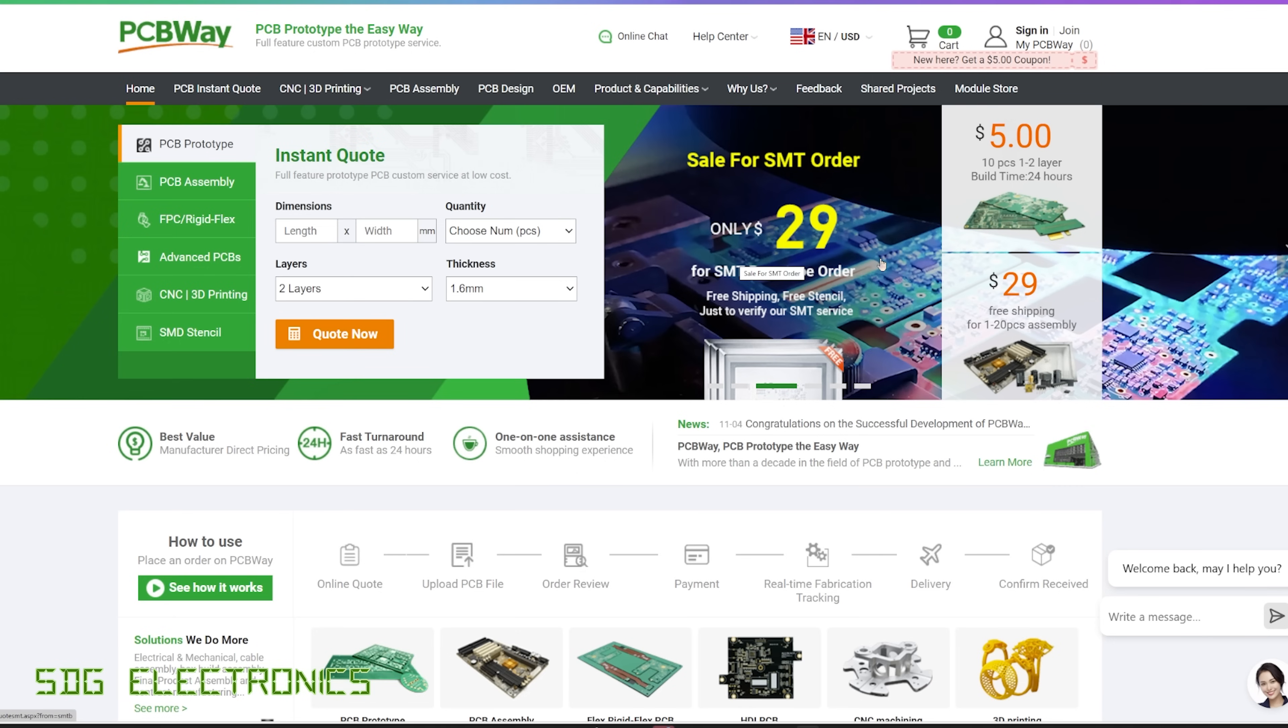So there's a $29 offer for your SMT orders. This allows you to get your PCBs manufactured and components assembled onto the PCB, and included in that cost is free shipping and the cost of the stencil used for the assembly.